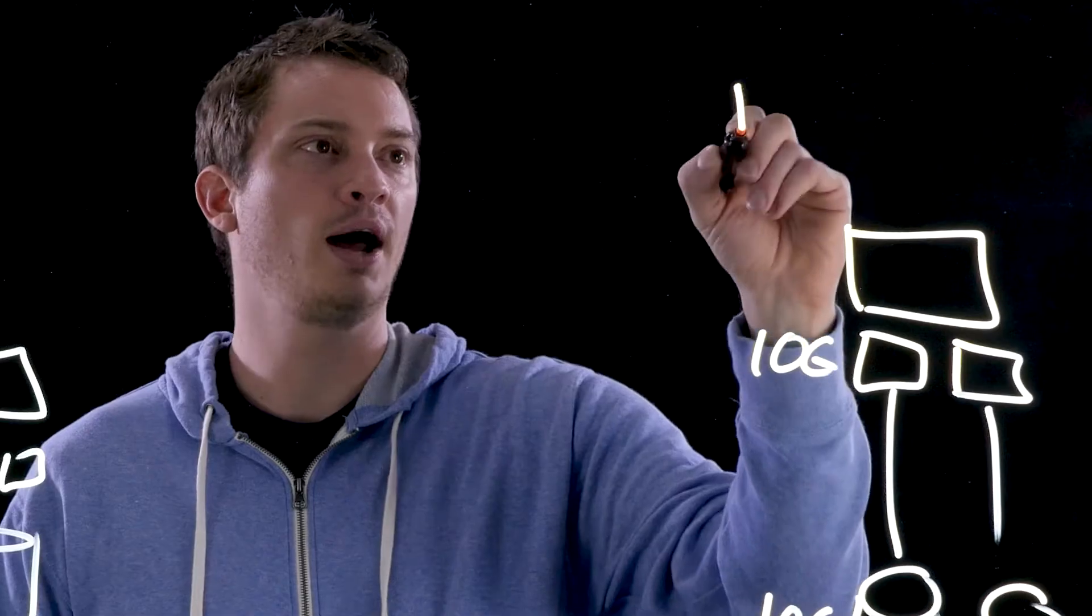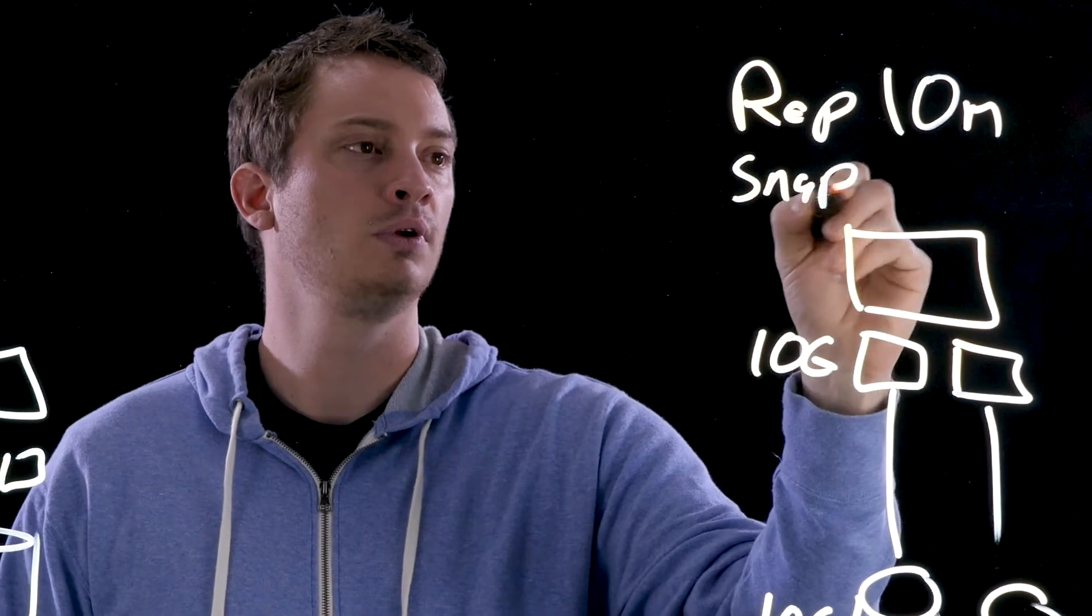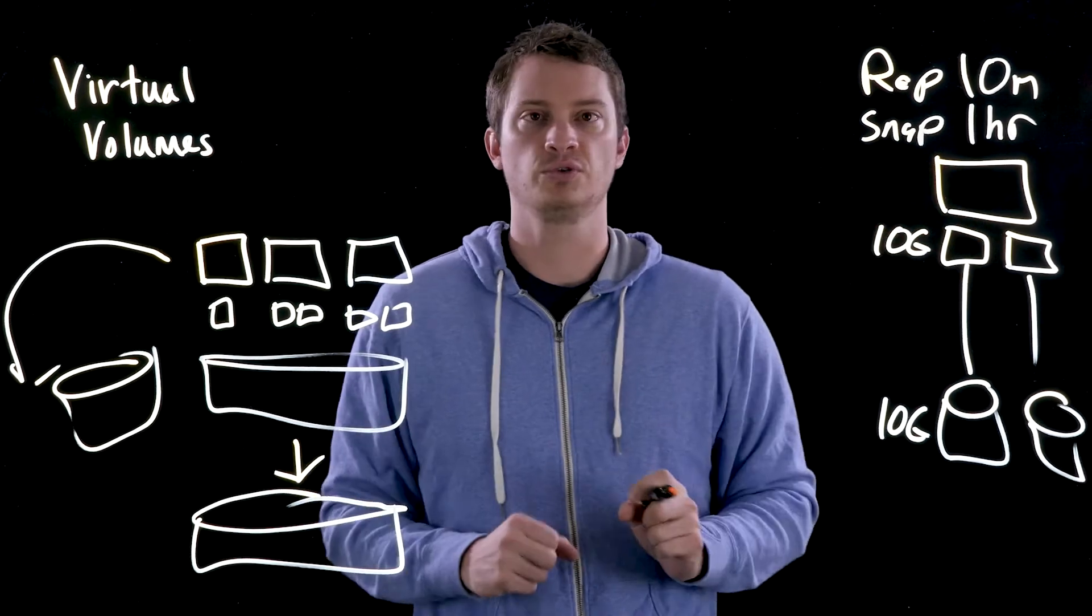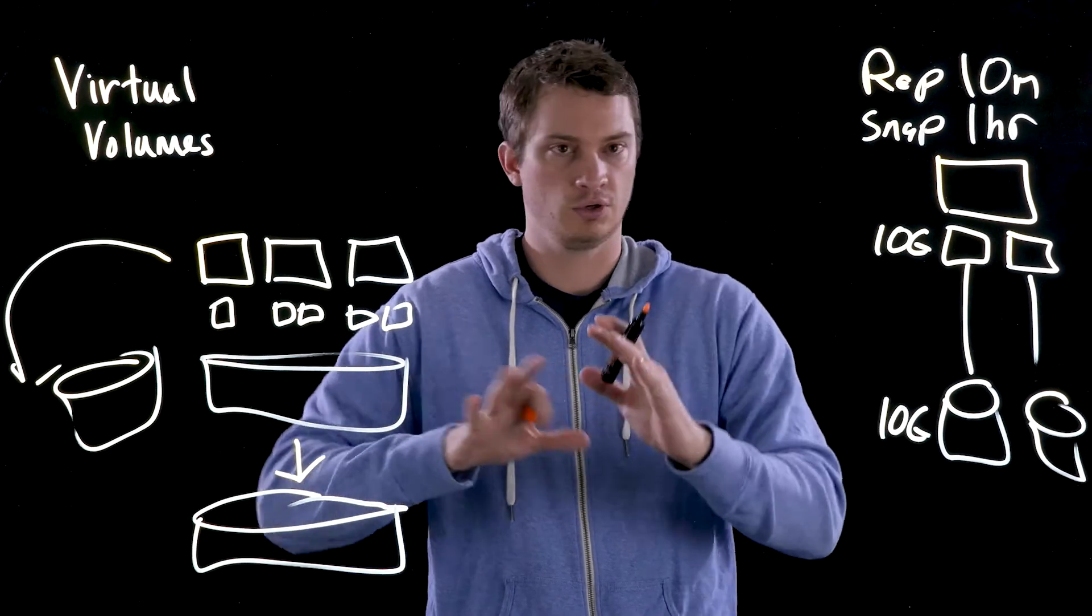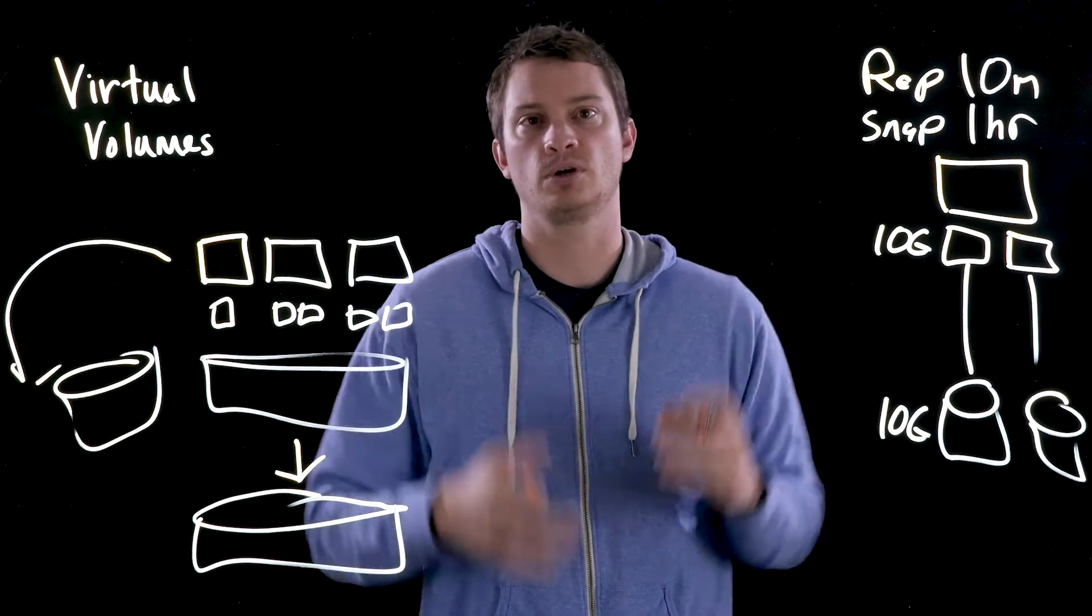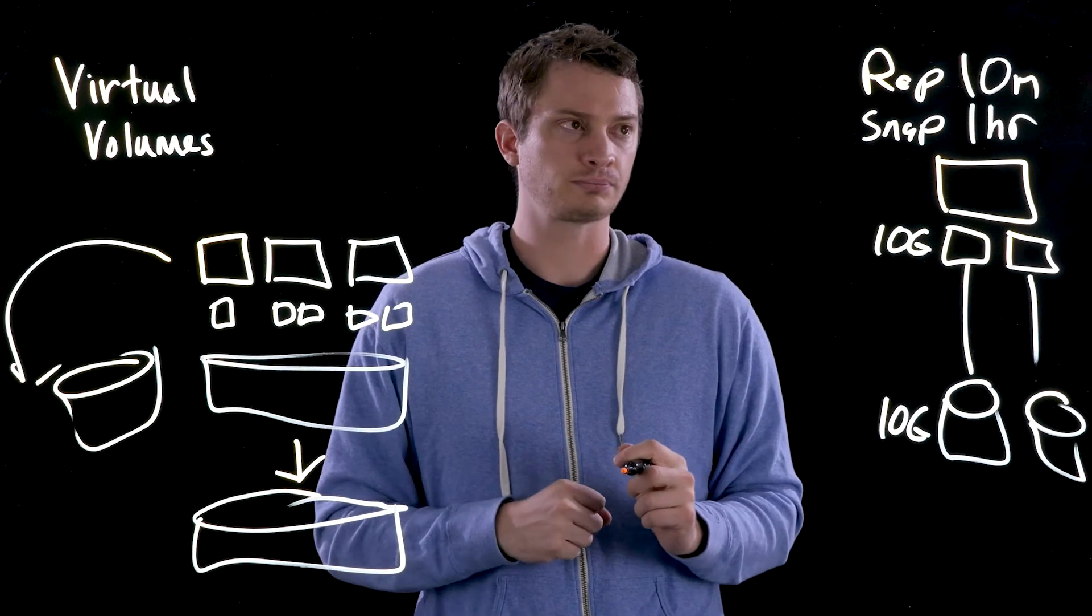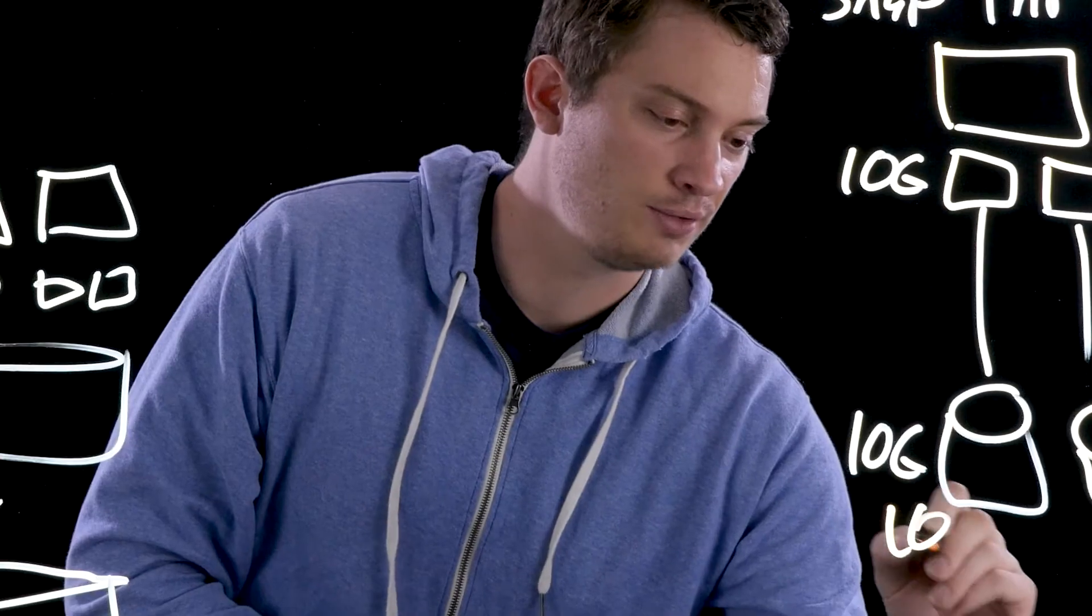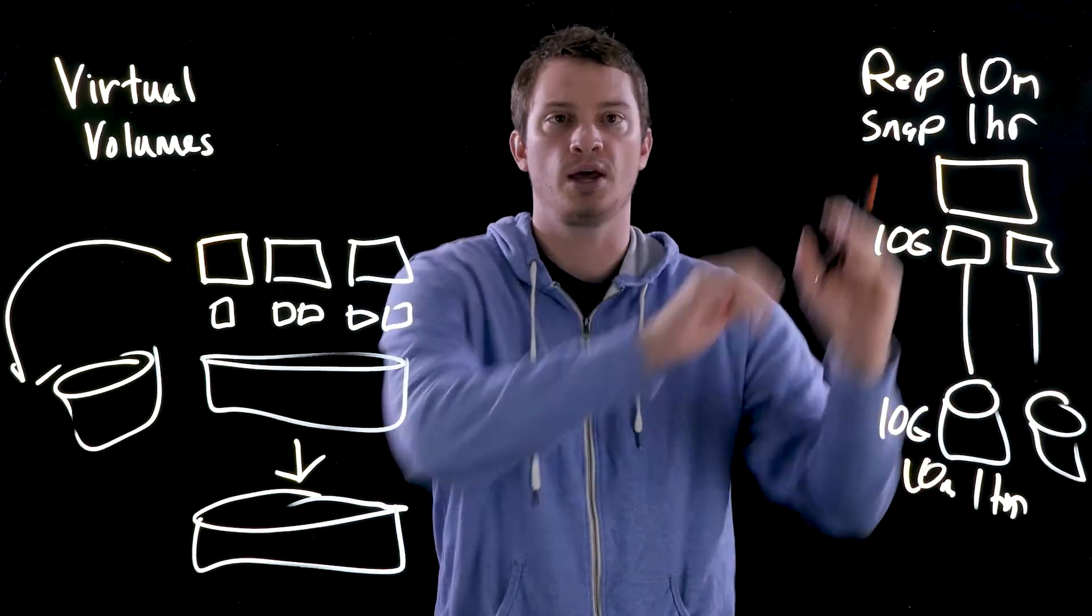And so inside of VMware, you can set up a policy. I want to replicate every 10 minutes and I want a snapshot once an hour. So you create a policy based on that. And then when you go to provision this virtual machine, you choose this policy. And then VMware will look at your available storage and say, hey, this vVol provider, this array here can do that. It can replicate every 10 minutes, it can snapshot once an hour. And so when you go to create that VM on that compliance storage, it will not only create the individual volumes that you need, but it also makes sure that this is 10 minutes and this is one hour.